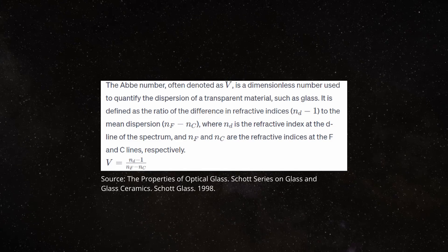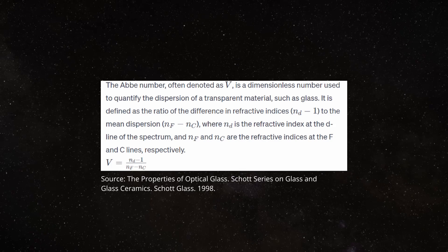First, master chromatic dispersion — meaning that the objective should bring the three primary colors, red, green and blue, into focus at the same point, minimizing or eliminating chromatic aberrations across the whole visible spectrum. A telescope's ability to perform in this category is reflected in the Abbe number, which quantifies the dispersion of a transparent material such as glass, defined as the ratio of the difference in refractive indices to the mean dispersion. The higher the number, the lower the dispersion and the better the light gets corrected.